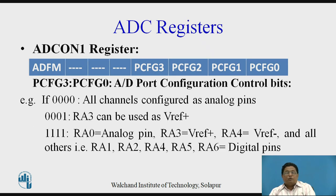The port configuration control bits are PCFG3 to PCFG0. If all these bits are 0,0,0,0, all channels are configured as analog pins. If set to 0,0,0,1, then RA3 can be used as V-reference plus. If all bits are 1,1,1,1, then RA0 is configured as analog, RA3 as V-reference plus, RA4 as V-reference minus, and all others are used as digital pins.